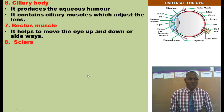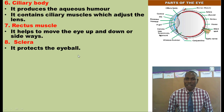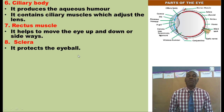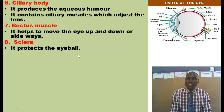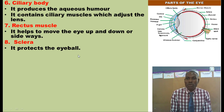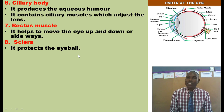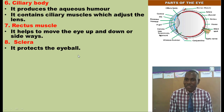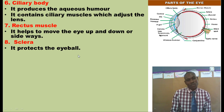Let us move on to the next part that we call the sclera. The sclera is a tough part of the eyeball, and its major function is to protect the eyeball from external damage. If anything tries to enter your eye, it will not cause much damage because of the tough sclera. That is the part of the eye that appears white in color.